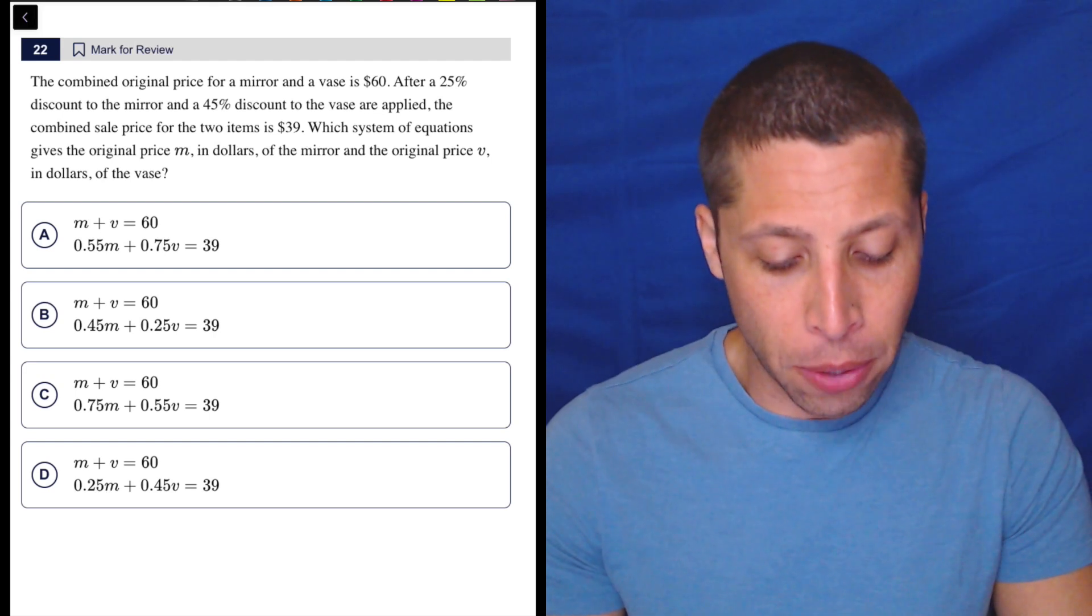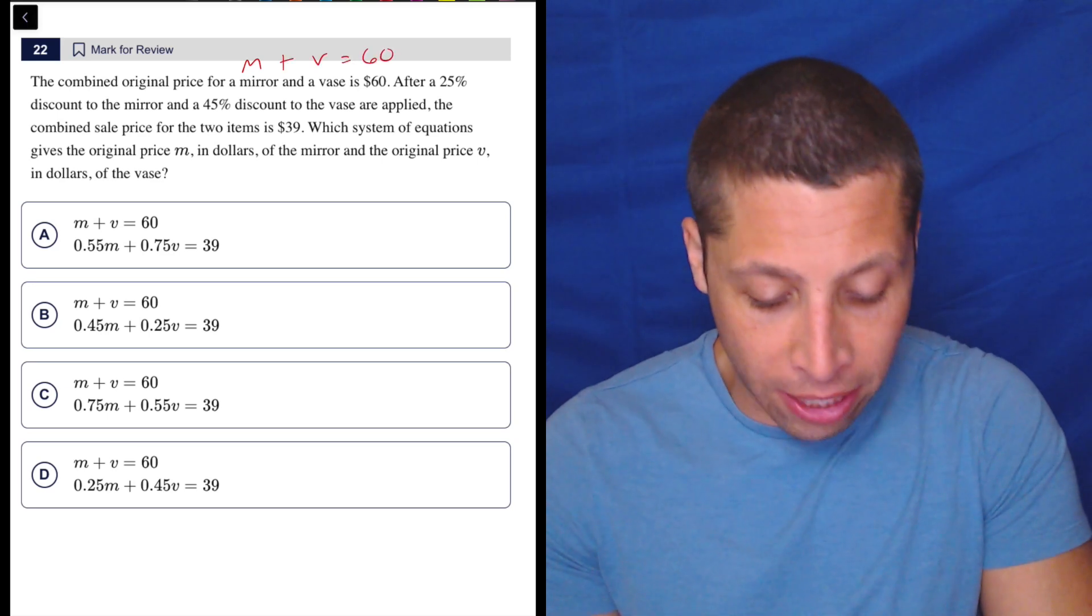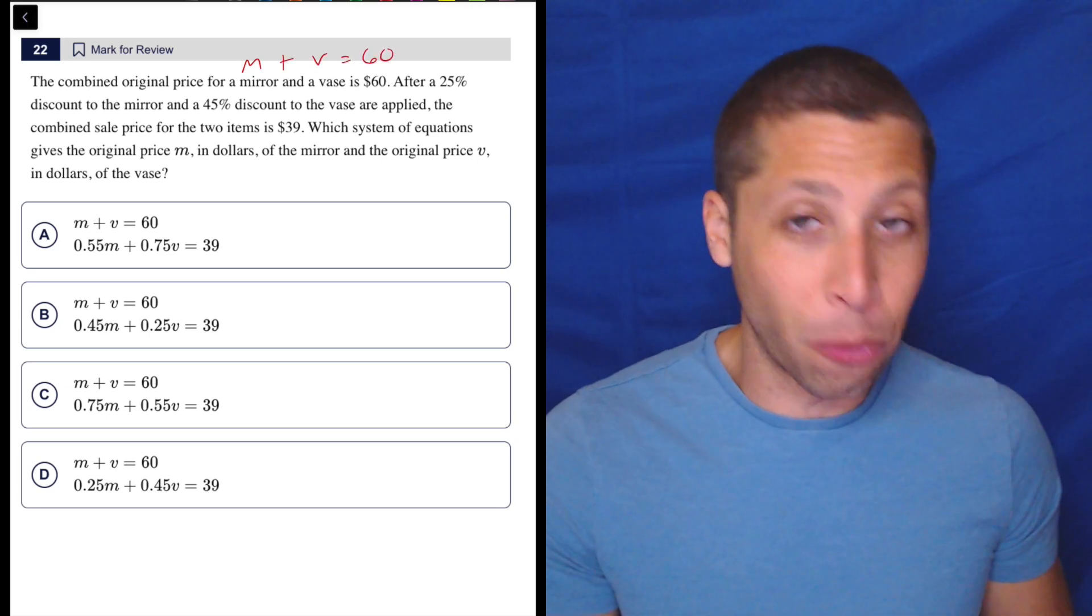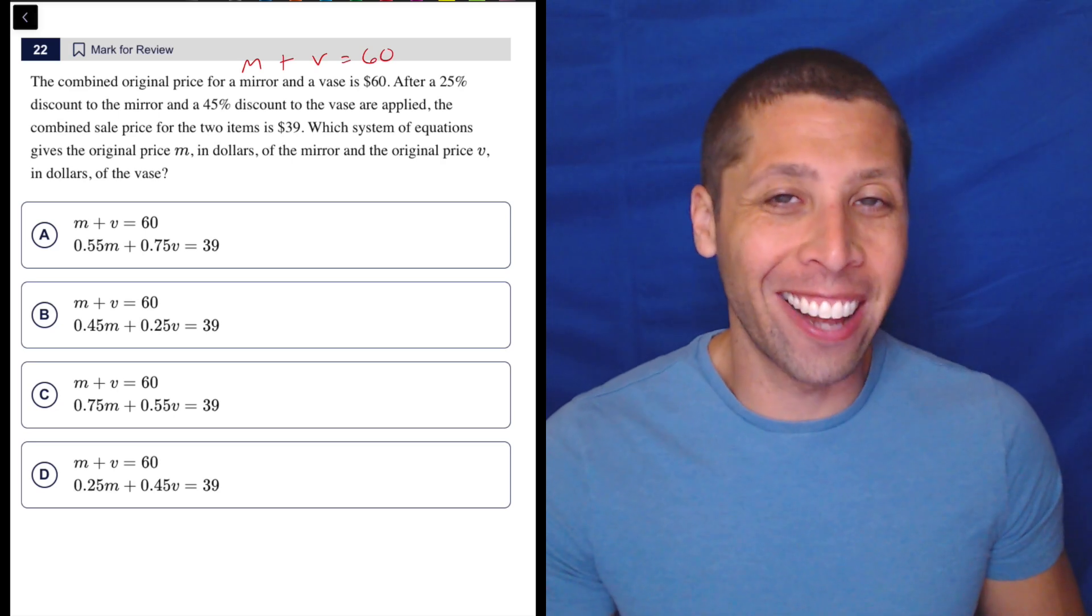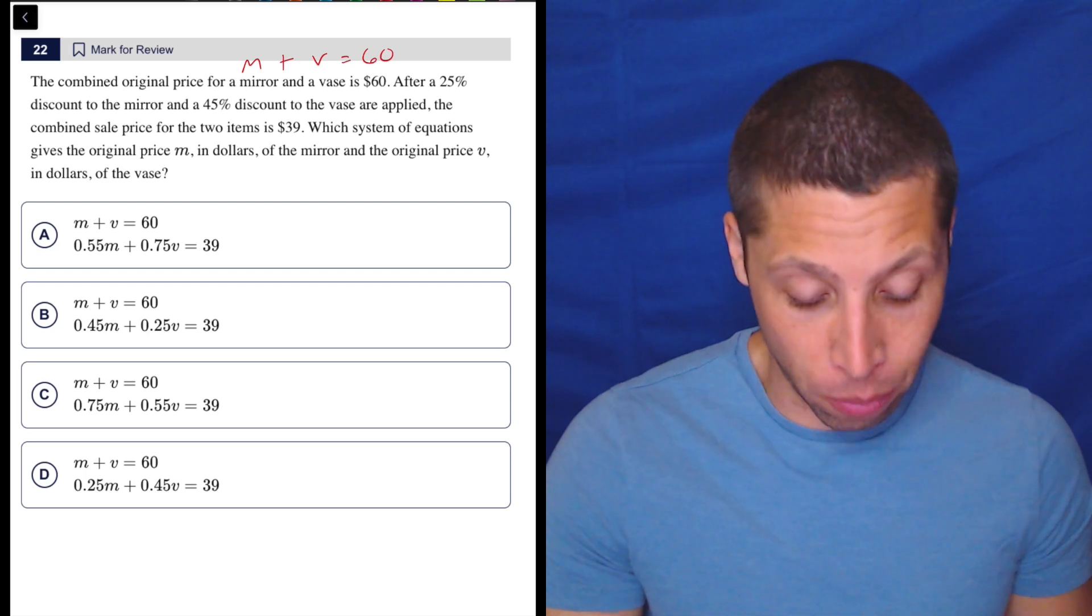The combined original price for a mirror and a vase is $60. So M and V equals 60, right? Like my brain instantly goes there. And I see that equation for all four choices. So they're not really making it about that, but at least it's getting us warmed up for thinking about this in the right way.